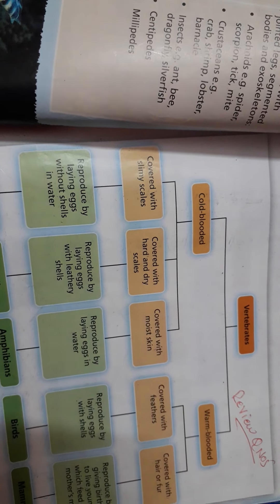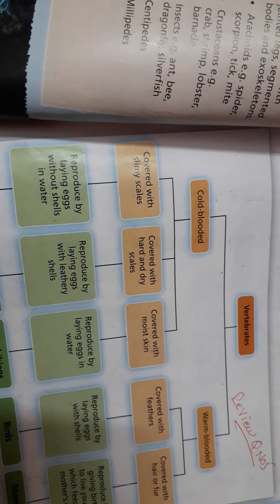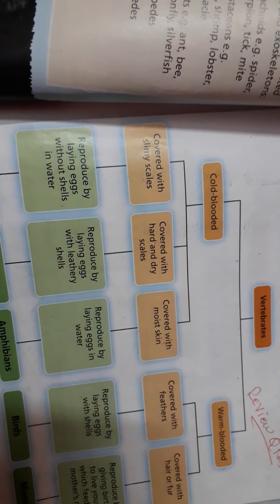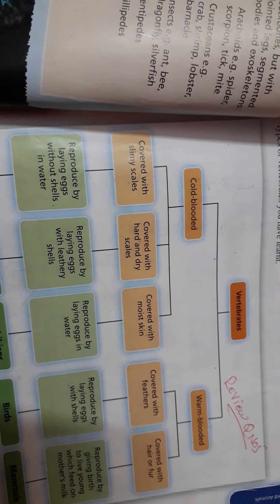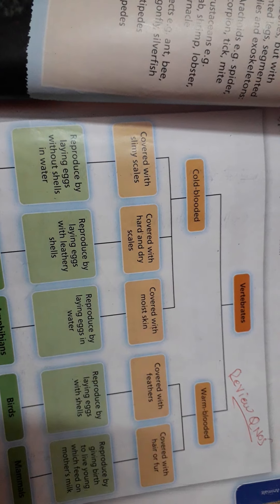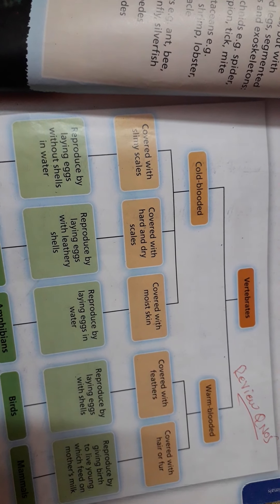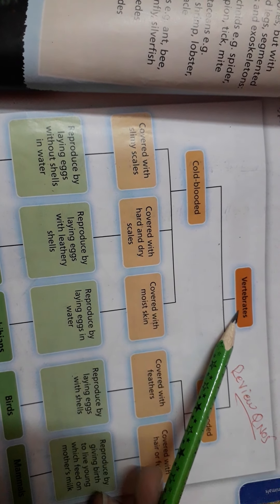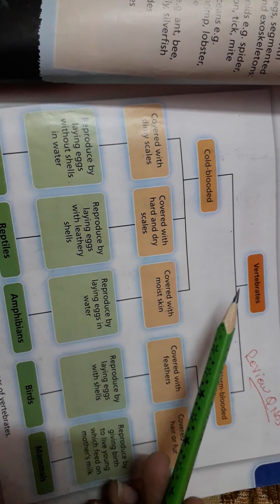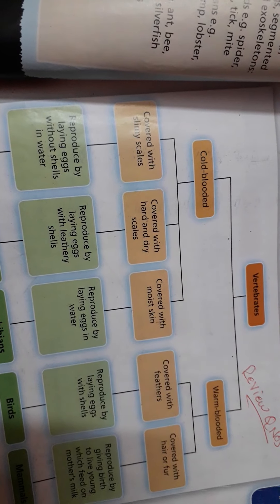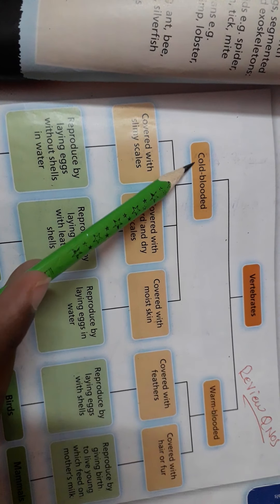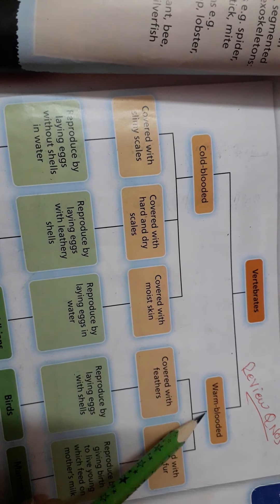Vertebrates and invertebrates are the two main divisions. Vertebrates have 5 classes because the animals within them are different from each other. To make a key, first of all we observe what is the basic difference between the organisms present in a particular group. In vertebrates, the basic difference we identified is whether the animals are cold-blooded or warm-blooded.